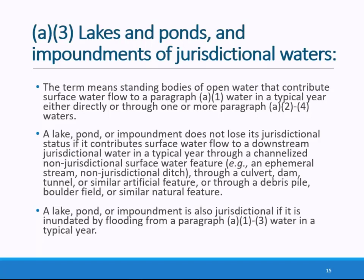In addition, lakes, ponds, and impoundments of jurisdictional waters are jurisdictional if they contribute surface water flow through artificial features or through certain natural features to a downstream jurisdictional water in a typical year. A contribution of surface water flow may occur through or over a levee, floodgates, reservoir releases, or other mechanisms. The agencies do not distinguish between natural and artificially manipulated surface water flow that connects a lake, pond, or impoundment with another water — the key is that they contribute surface water flow to a jurisdictional water in a typical year.